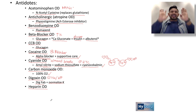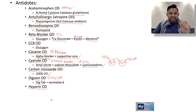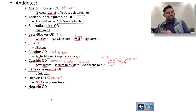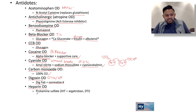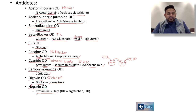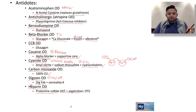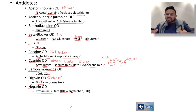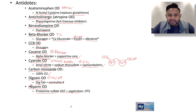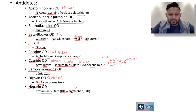Heparin overdose — the mechanism is potentiation of antithrombin 3, and overdose causes bleeding. The antidote is protamine sulfate; the mnemonic is that heparin's 'H' is like a proton (H+), so protamine. Also important: in heparin-induced thrombocytopenia (HIT), when platelets fall three to five days after starting heparin, switch to a direct thrombin inhibitor — argatroban.